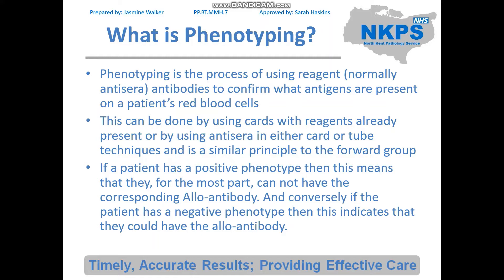If a patient has a positive phenotype, this means that they, for the most part, cannot have the corresponding alloantibody. And conversely, if the patient has a negative phenotype, then this indicates that they could have the alloantibody. Going back to that grouping analogy, if the patient's forward group is positive with the A reagent, they're going to be group A because the red cell antigens will be A, and they're going to have the antibodies for B but be negative for those A antibodies. So they're not going to have the antibodies to the antigen that's on their red cells.